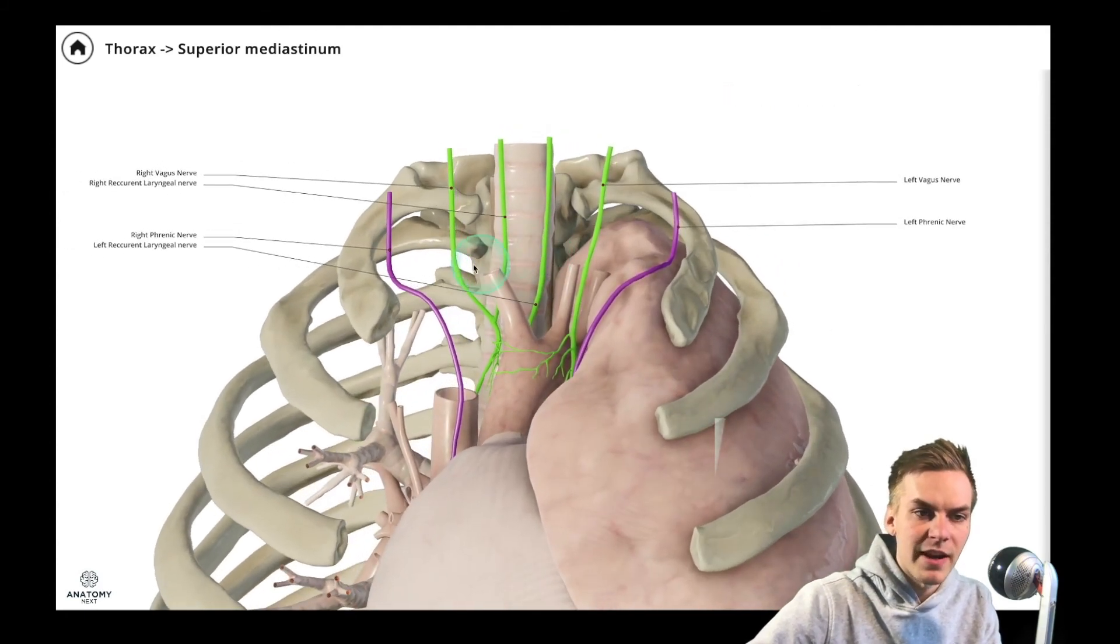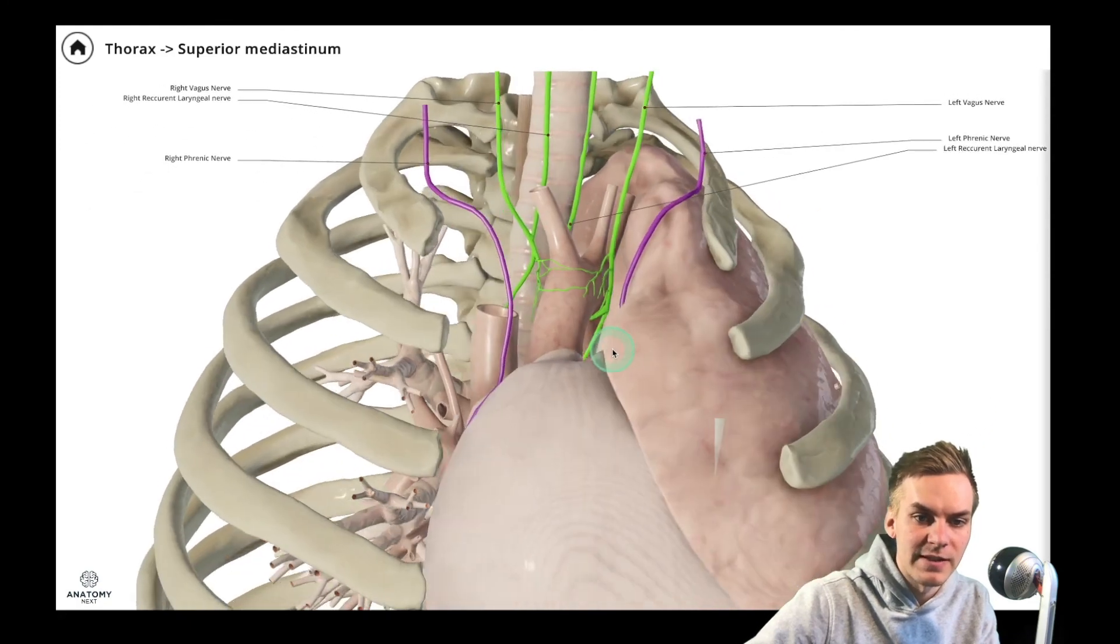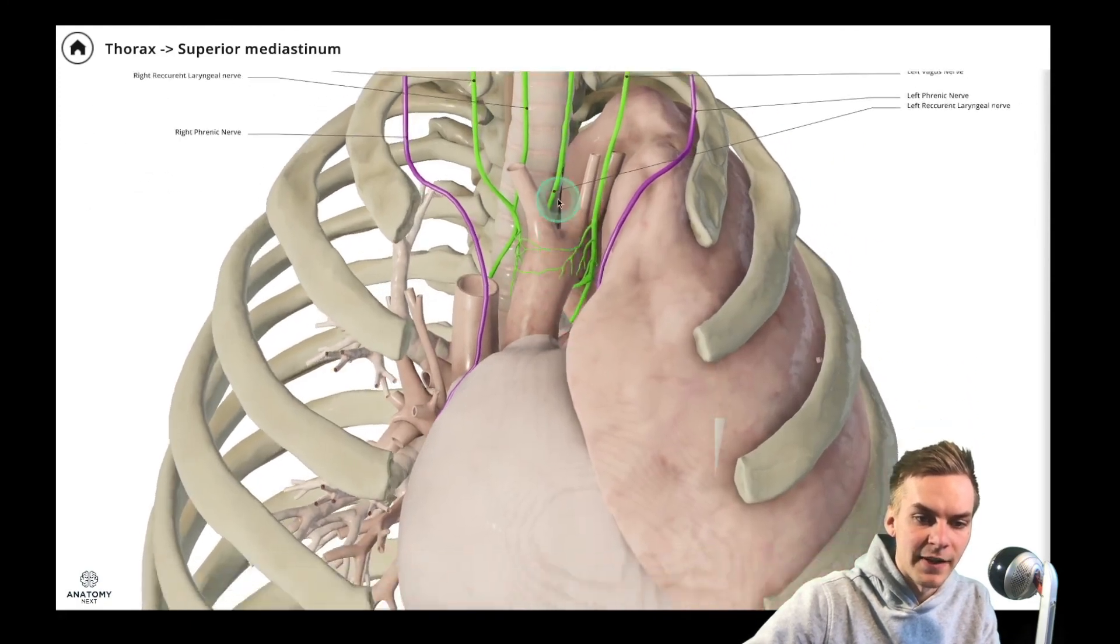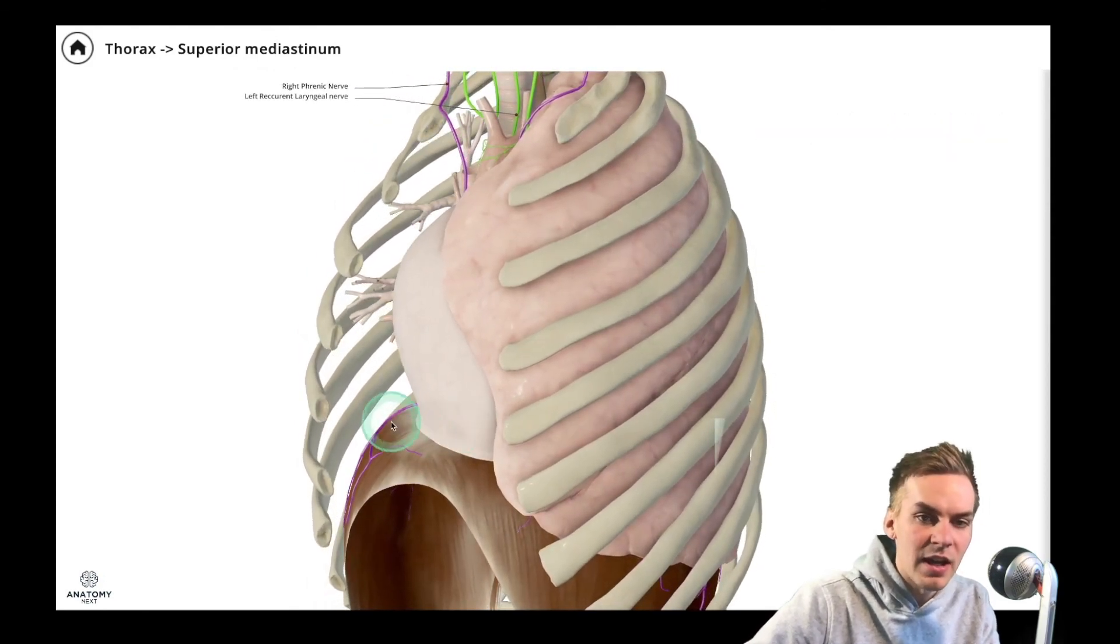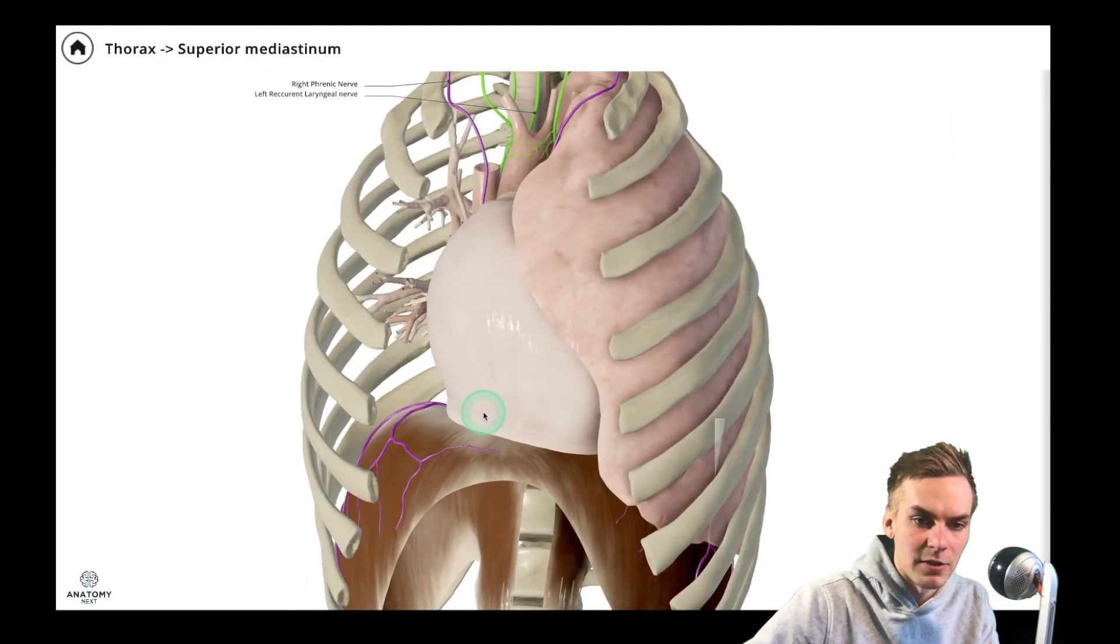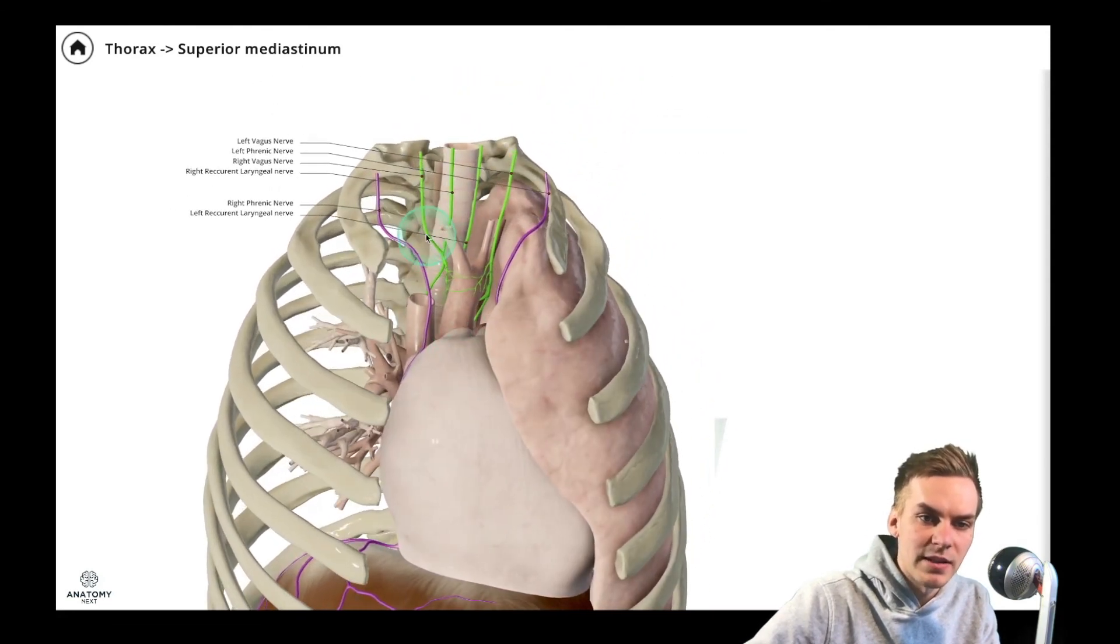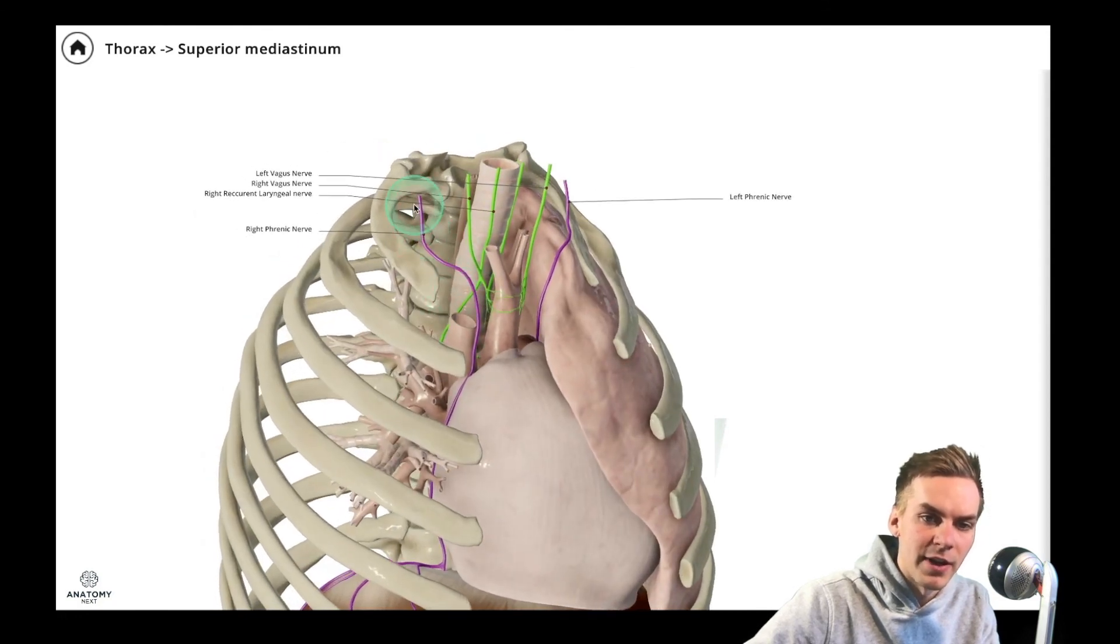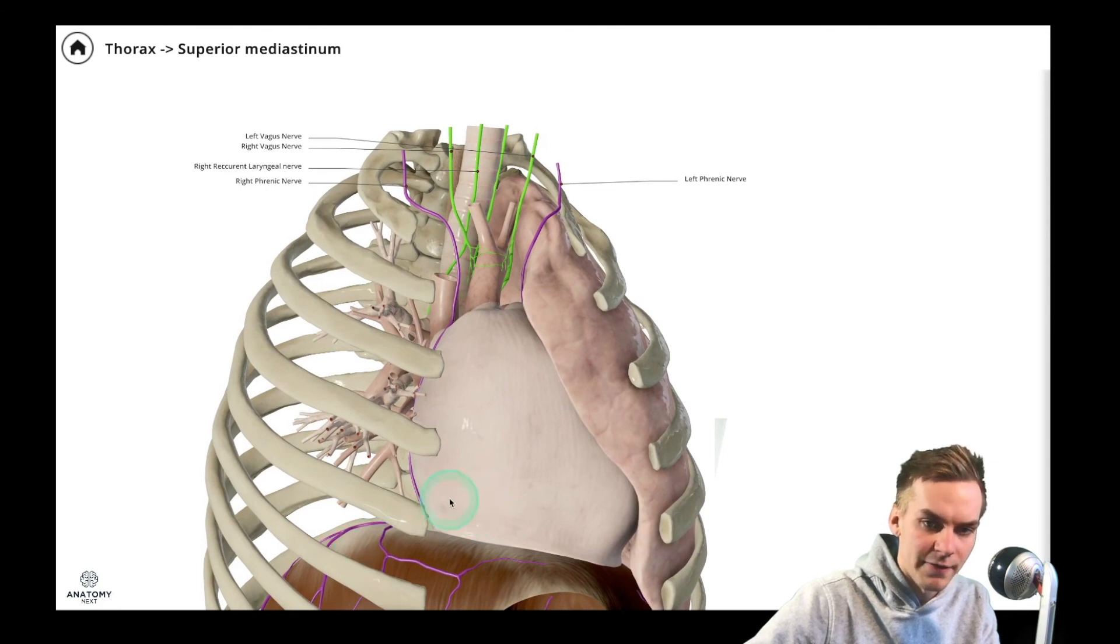As I mentioned the right phrenic nerve and left phrenic nerve originate from the spinal segments of C3 to C5 and these are very important nerves because they innervate the diaphragm so they provide the motor innervation and they are actually a somatic nerve so they are not part of the autonomic nervous system. You can see that the phrenic nerves are located more anterior than the vagus nerves and they also wrap around the heart and afterwards they branch on the diaphragm.